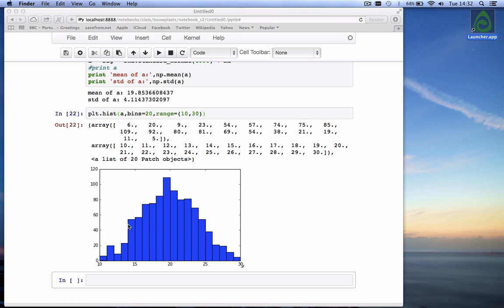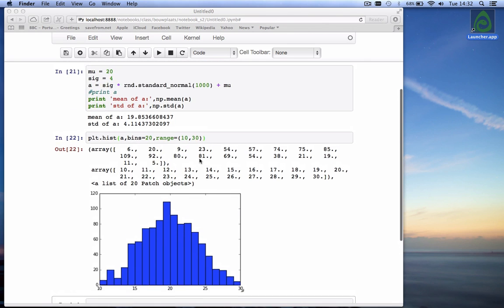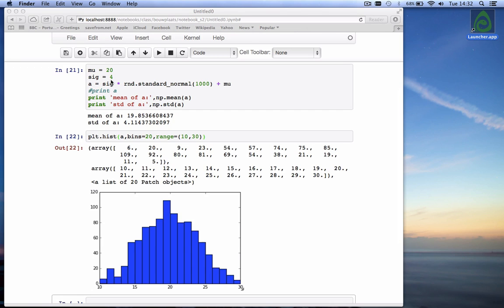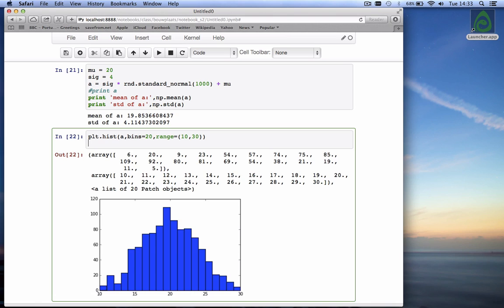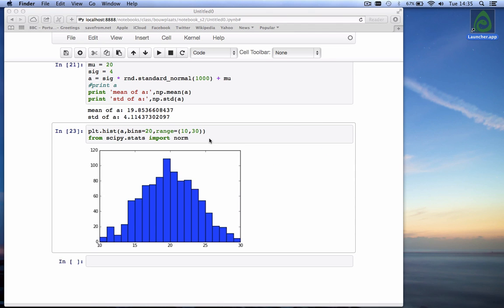What I want to do next is try to draw on the same graph here the normal distribution or the probability density function of the normal distribution that we have drawn our 1000 numbers from. Here's our distribution, it has a mu, a mean of 20, and a standard deviation of 4. This is the histogram of the 1000 values that we've drawn. And I want to have on that same graph a line that is the probability density function that we've drawn from. For that there is a function called norm for normal distribution. And norm is part of a package called scipy.stats. Scipy is the scientific Python package and it has a bunch of sub packages. One is called stats for statistics. So we import that one. We say from scipy.stats import norm.